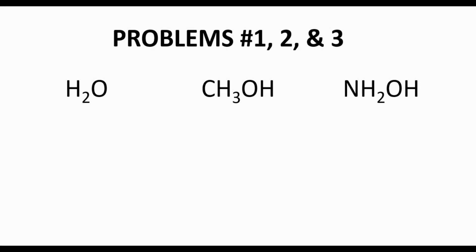Our first molecule is water. When reading condensed structural formulas, we start with our leftmost larger atom — not hydrogen — so we start with the oxygen. The oxygen is attached to two hydrogens. This oxygen needs a full octet; right now we only show two bonds. It needs eight total electrons, so we need two lone pairs to give it a full octet.